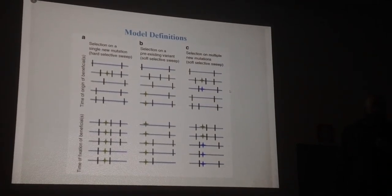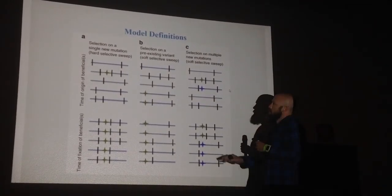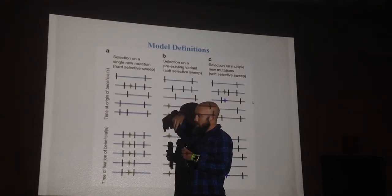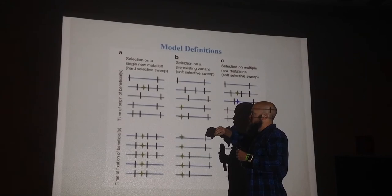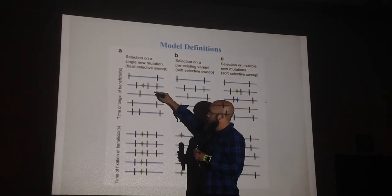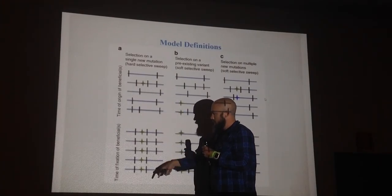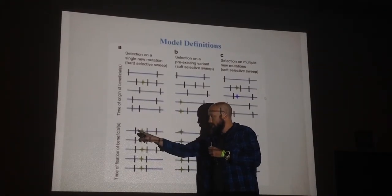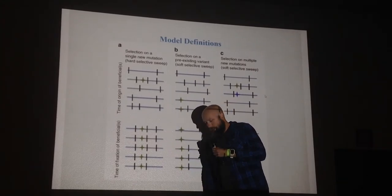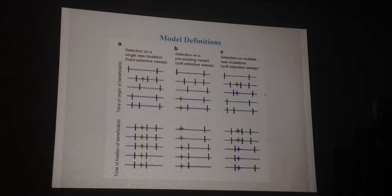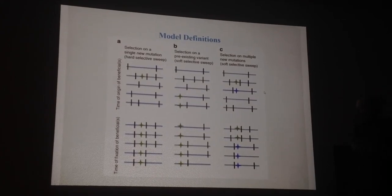Let's just get on the same page with model definitions as a starting point. Let's go left to right here. This is a hard sweep as we're all very familiar with, population genetics, where we have a time point where a beneficial mutation arises on a chromosome carrying other neutrals, and at the time of fixation we fix the beneficial and closely linked neutrals, hitchhiking to some intermediate frequency at some recombination distance away.